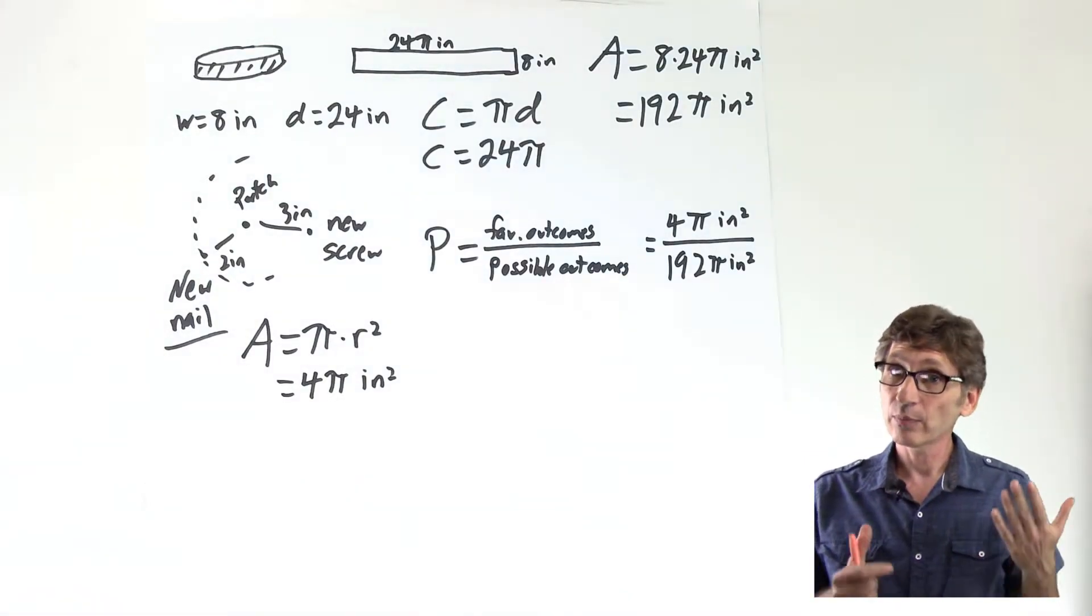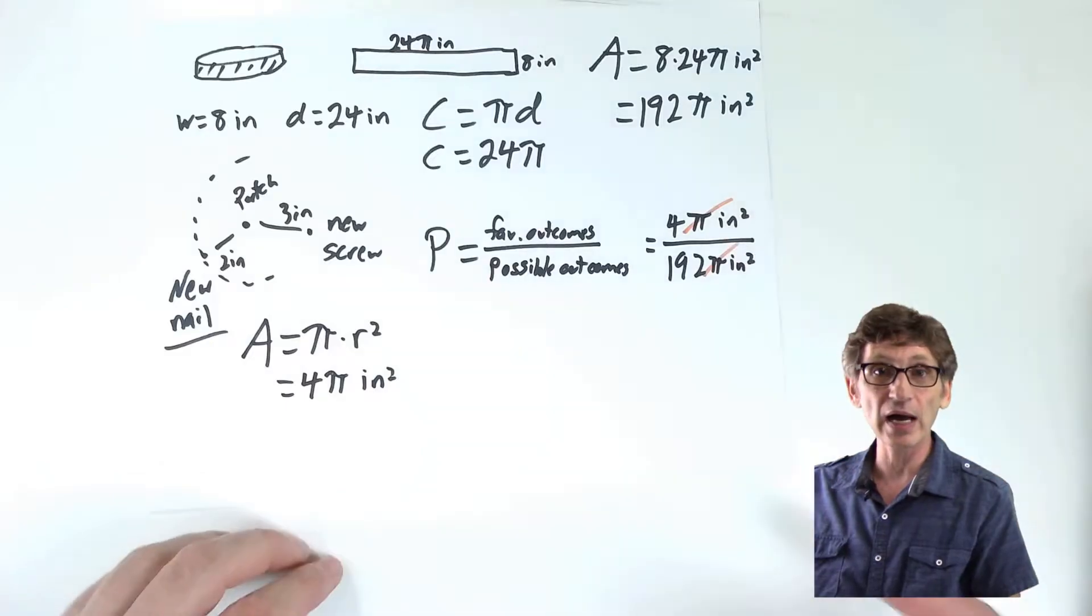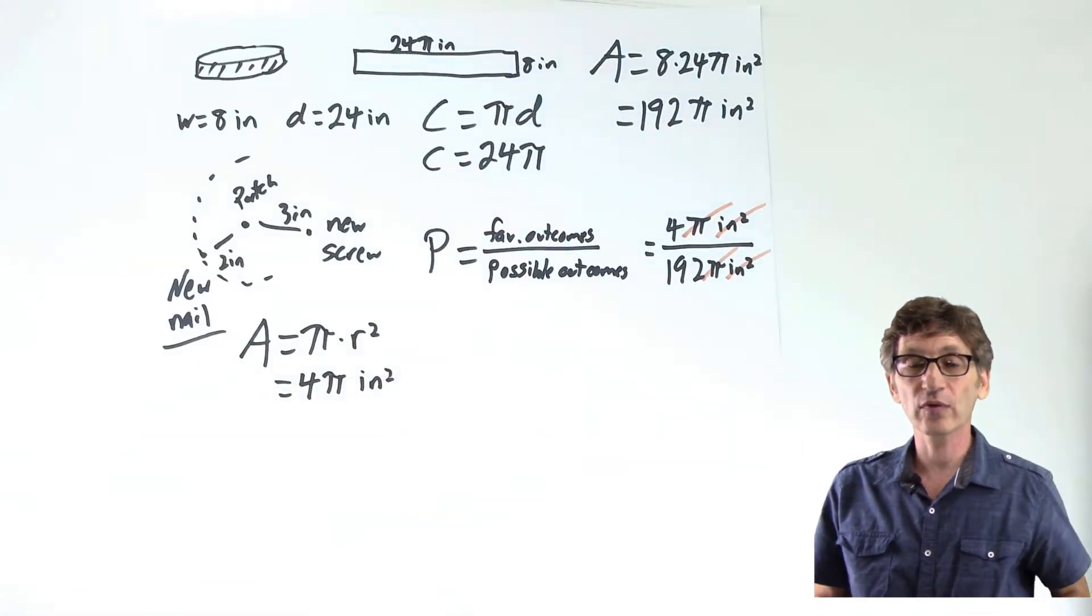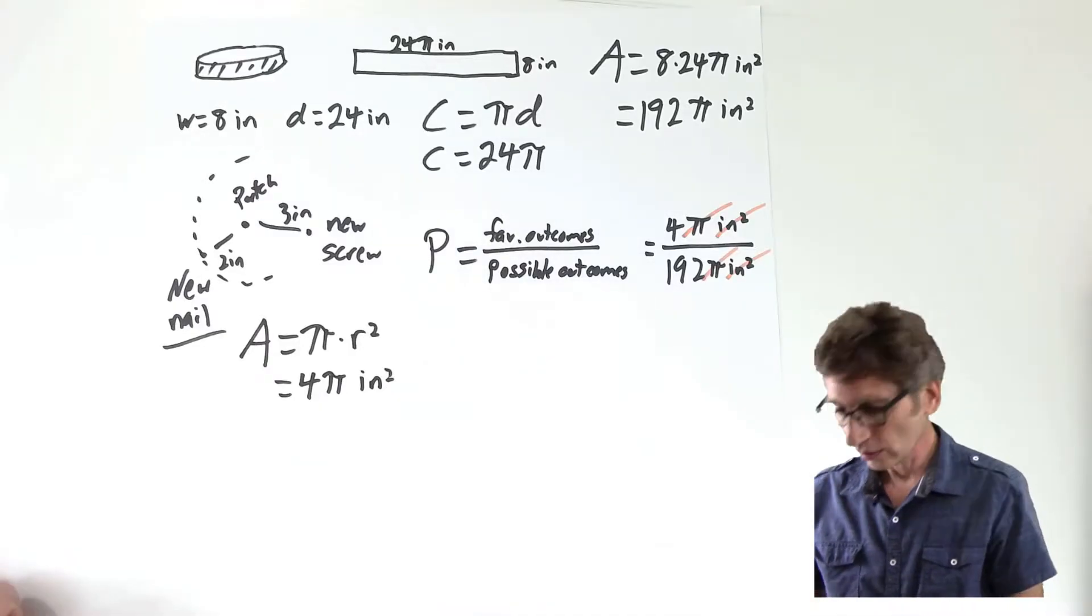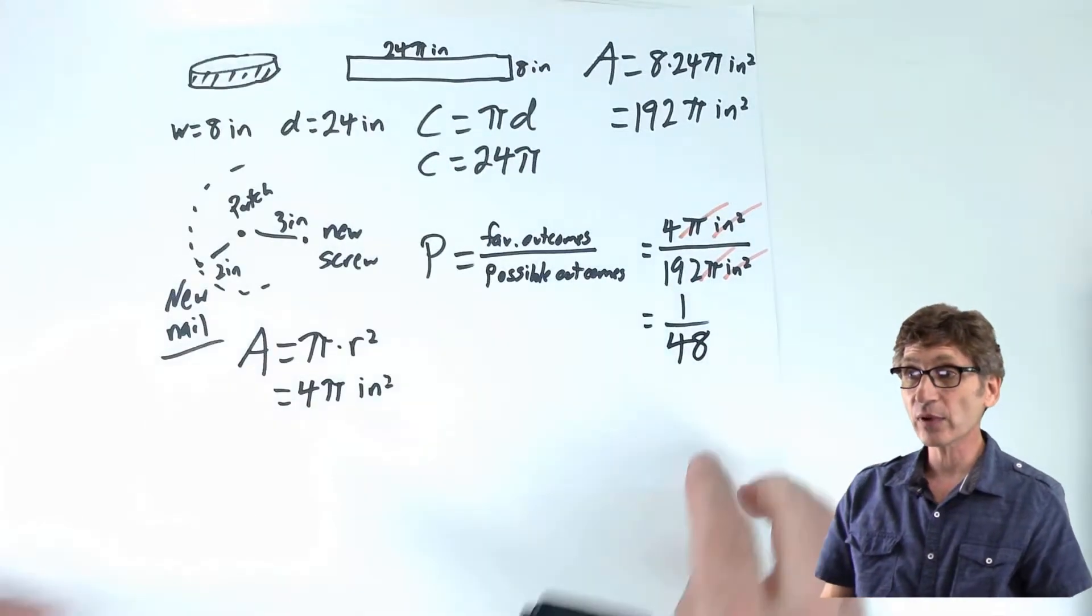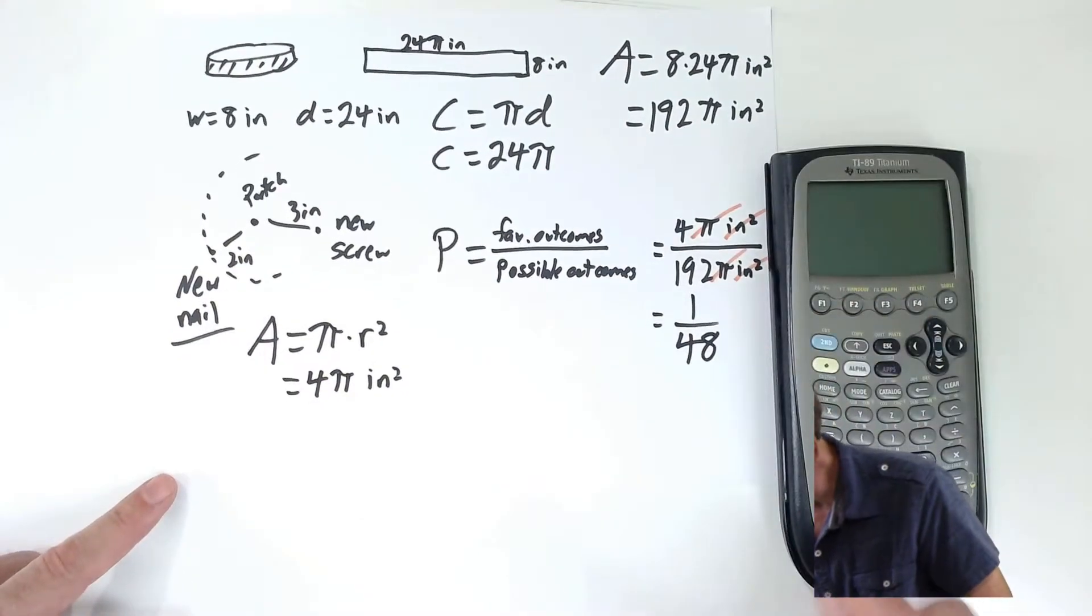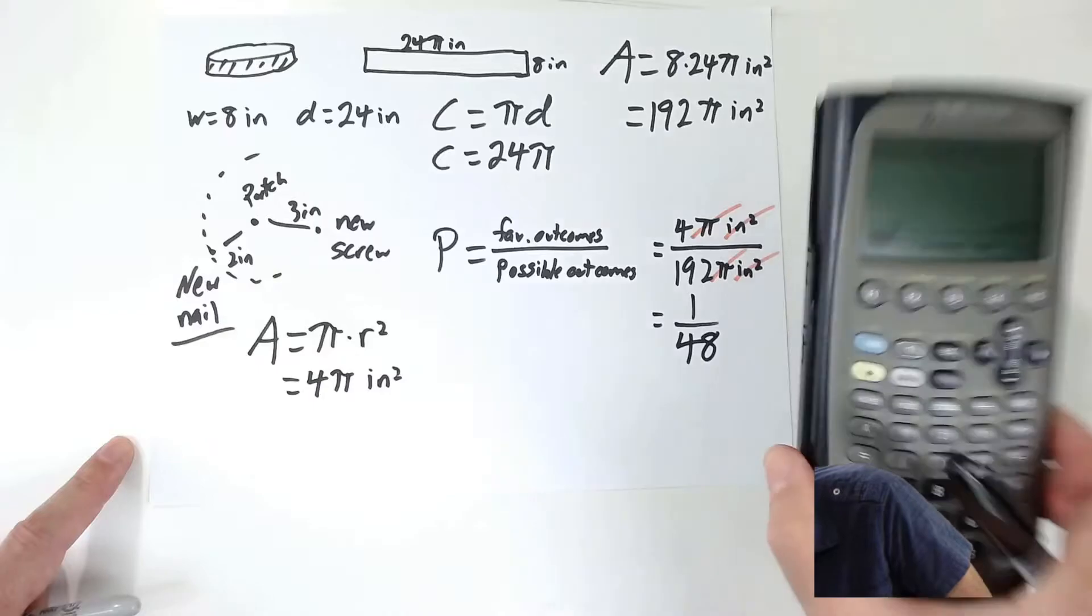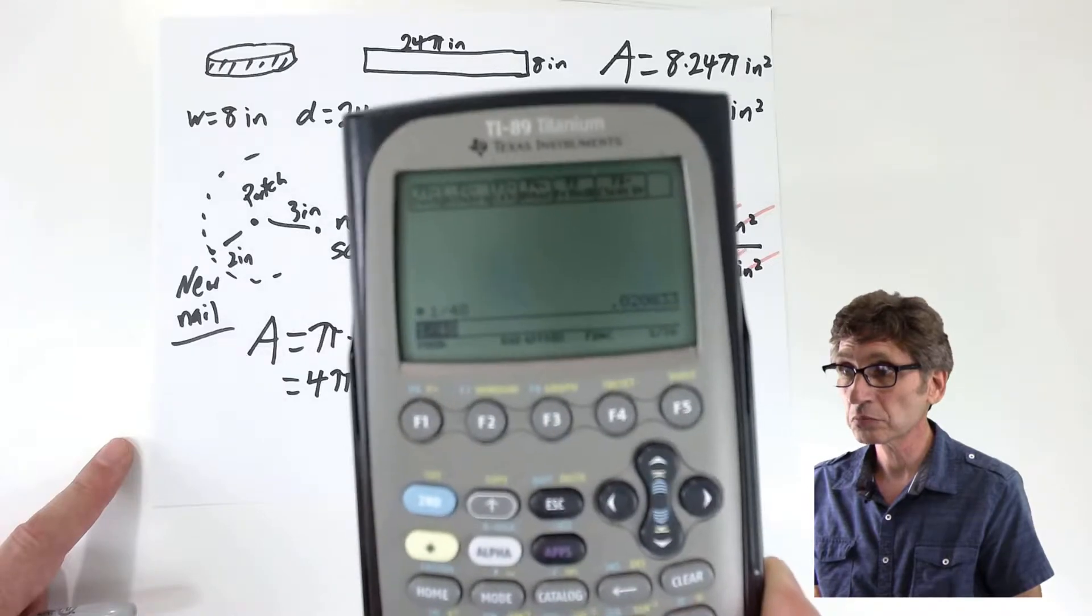Let's see what we can do to make this a little more readable. And like I hoped, pi often takes care of itself. And in this situation, pi canceled with pi. And look at that, inches squared canceled with inches squared, leaving us with four over 192. And we can simplify that. Four goes into 192. This is one over 48. So I can leave the probability as a ratio of one over 48. Or if I'm really curious, I could take a look at one divided by 48. And I see it would be a little bit more than 2%.